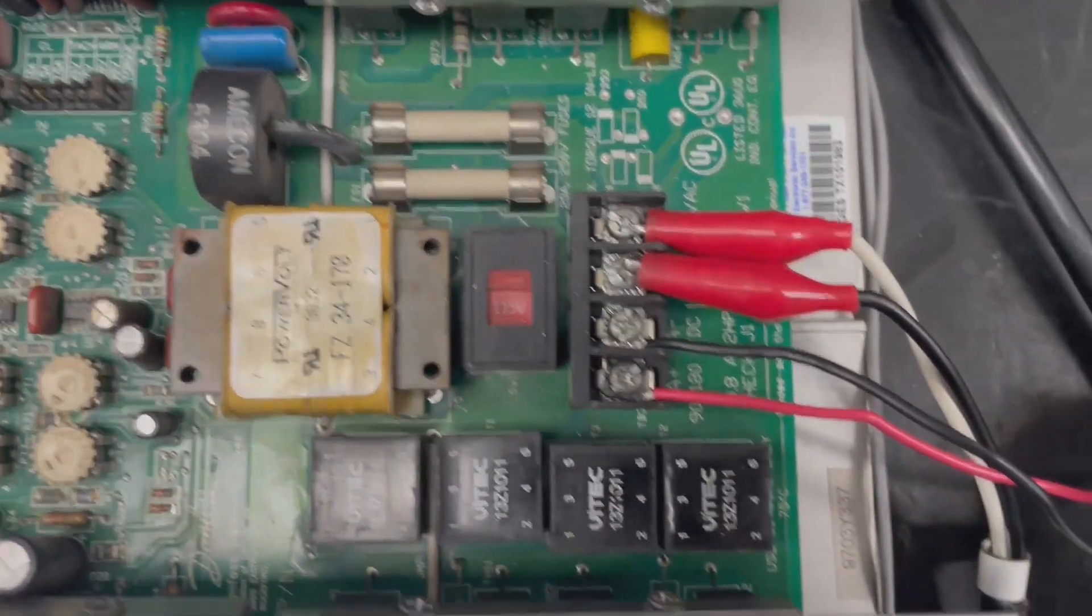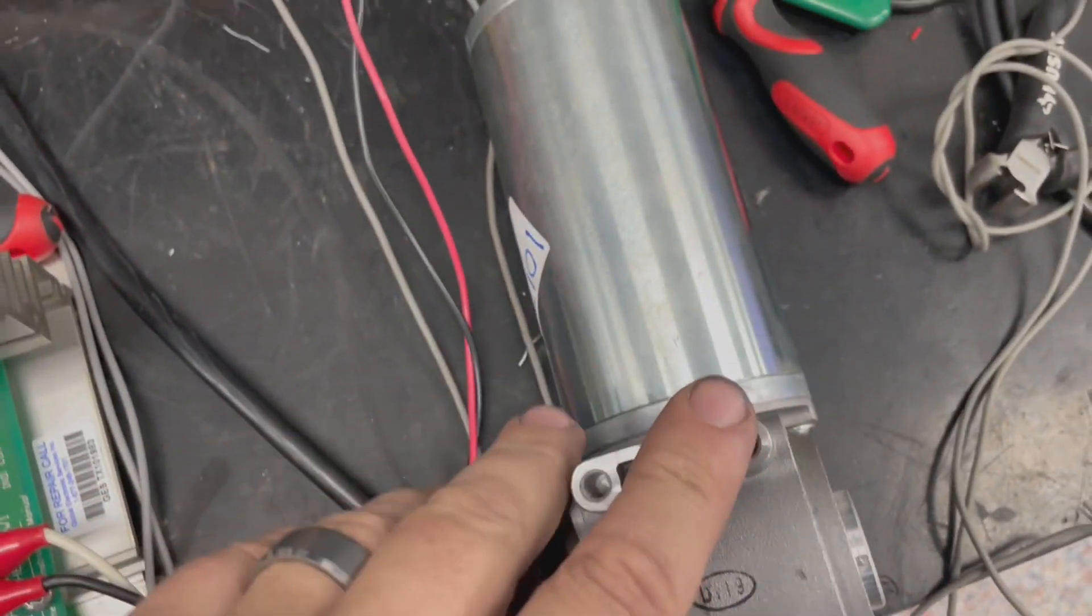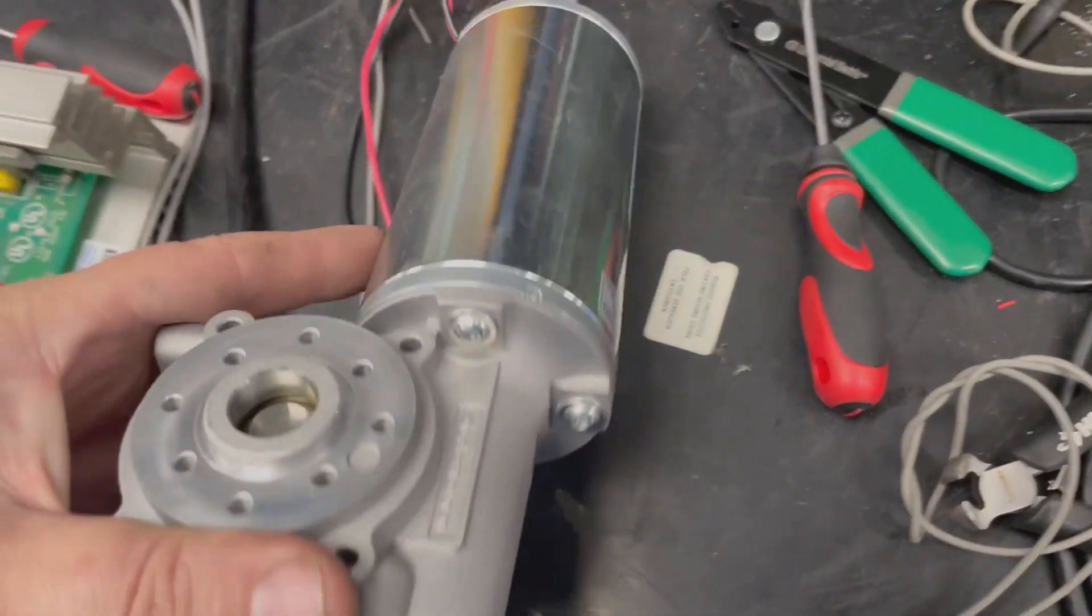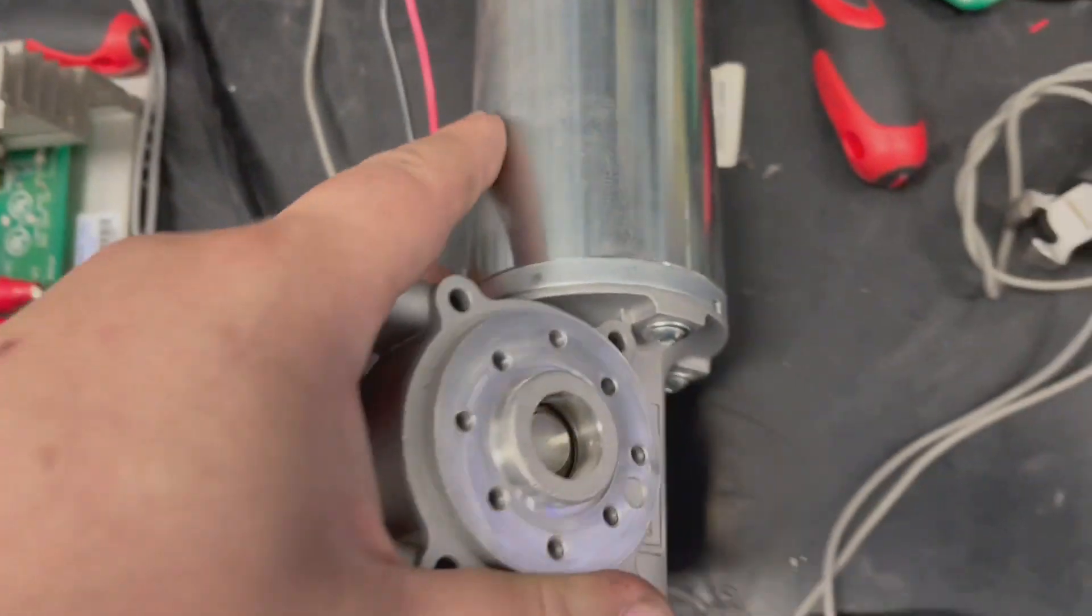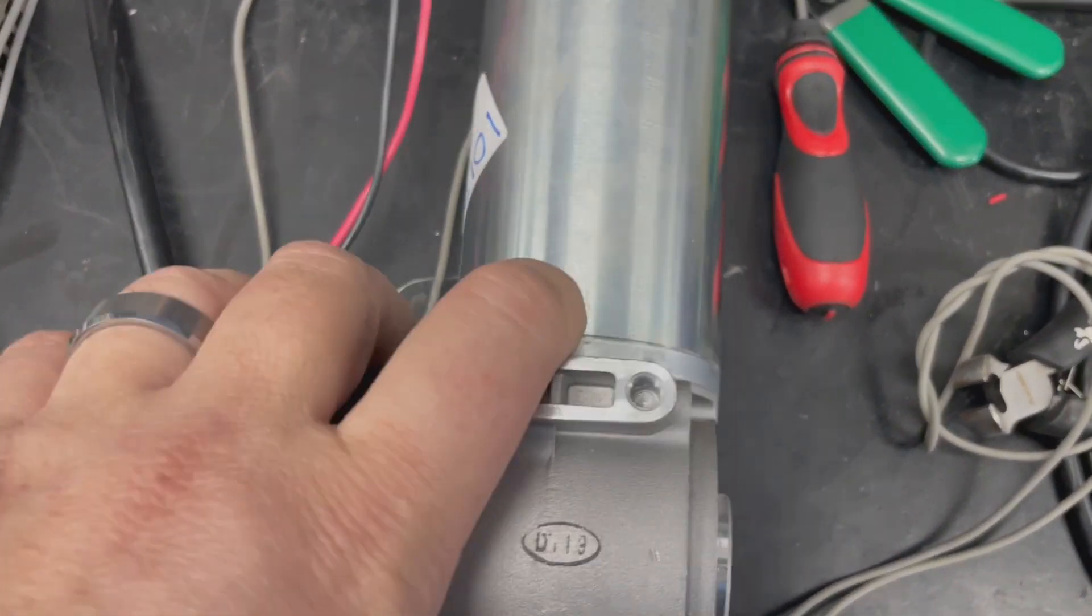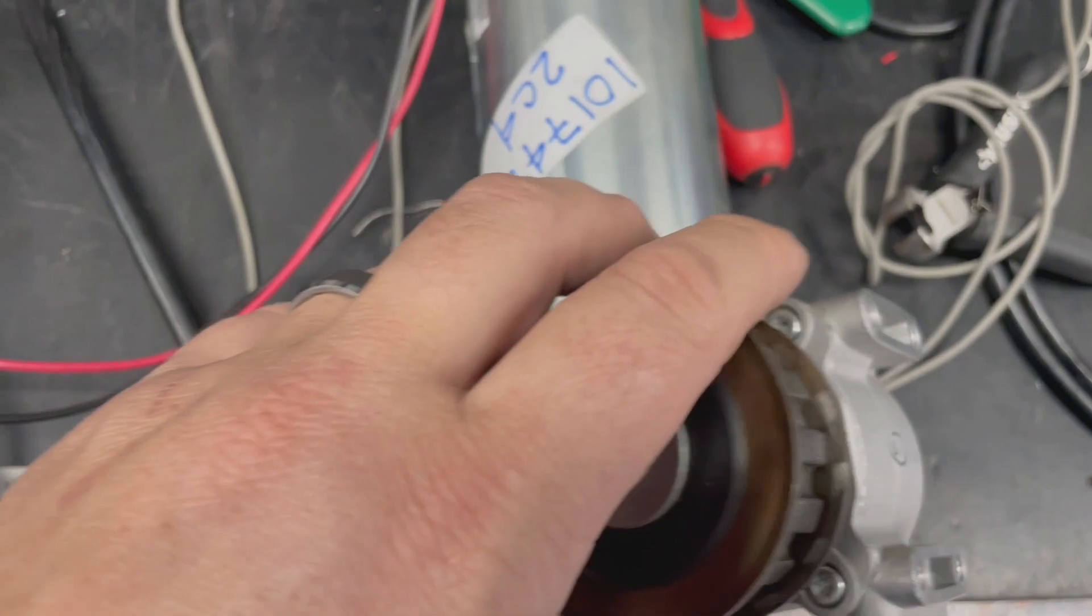We have currently set the input to 115 volts and we have our armature connected to a Dunker Motoren DC motor that we're using for testing. This motor is also attached to a gearbox, so let's go ahead and set up our test.